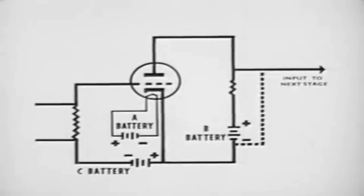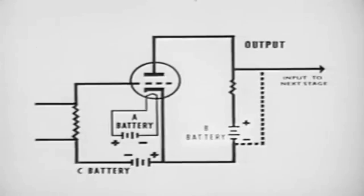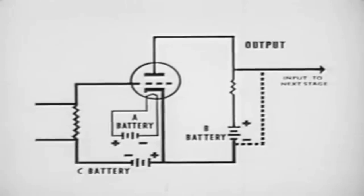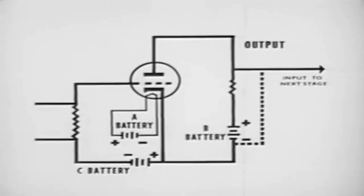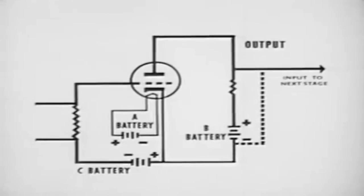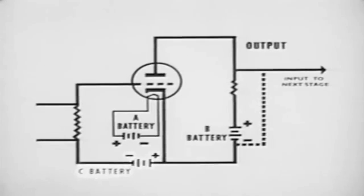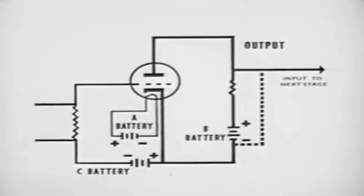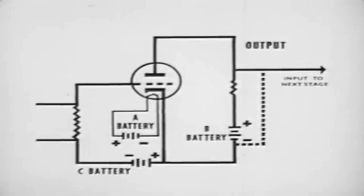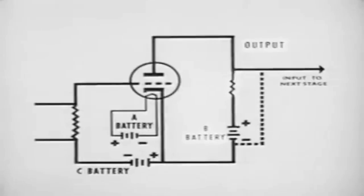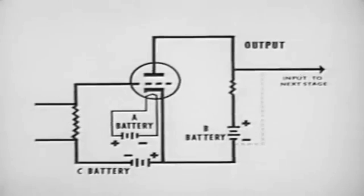Now in more specific terms, let's study the construction and operation of a typical voltage amplifier. The heart of this amplifier is the vacuum tube. Power for the output circuit is supplied by a B supply, in this case a battery. The positive side of the B battery is connected through a resistor to the plate of the tube. The negative side of the B battery is connected to the cathode. Bias voltage is supplied by a C battery with the positive side connected to the cathode and the negative side connected through a resistor to the grid.